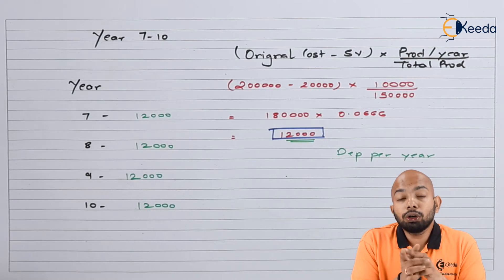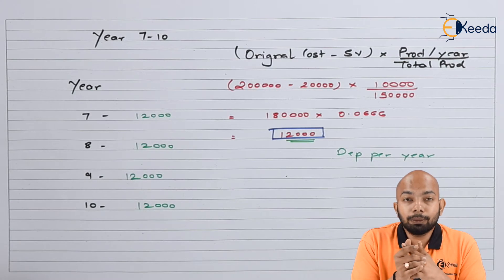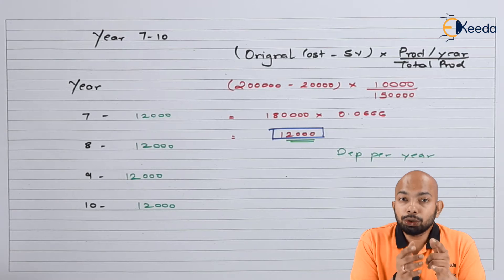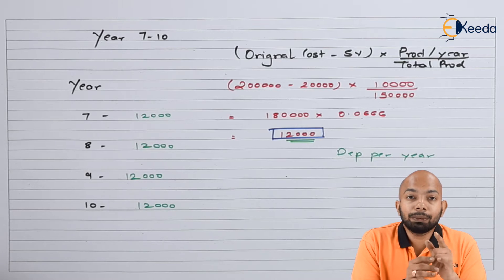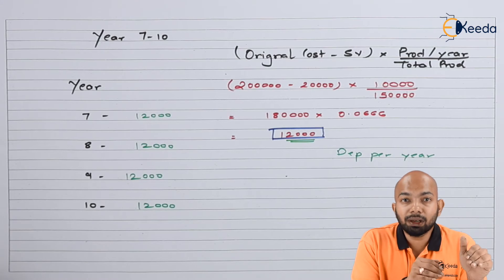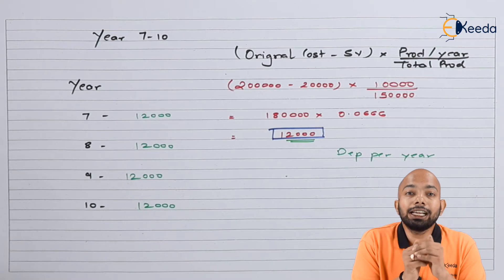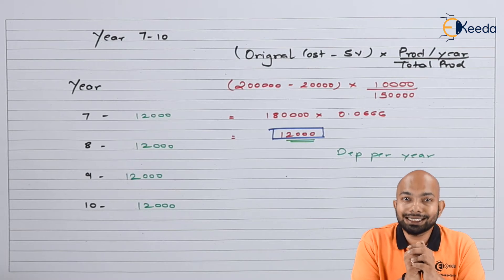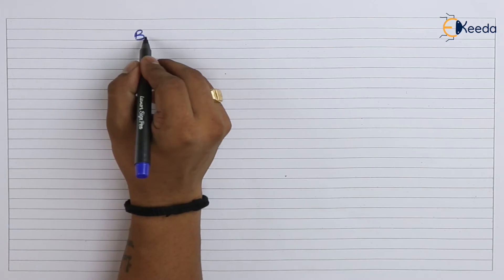Now we'll go on to the last step, which marks the closure of the sum — that means calculating the book value of this specific machine at the end of its 6th year. Let's figure it out.